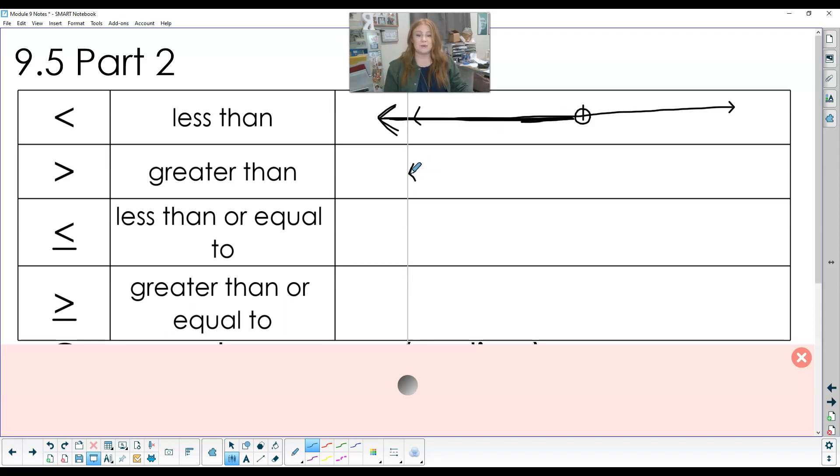So greater than is going to do the exact same thing, but it's going to go the other way. So on my number line, I would identify the number it has to be bigger than and circle it with a nice open circle. And then because it's greater than, it's going to go toward the positive larger side of my number line. And I'll draw my arrow to say anything this way is greater and could be a solution. Anything this line touches forever and ever could be an answer to this inequality. So these ones have to be open. They are not including the actual number you circled.